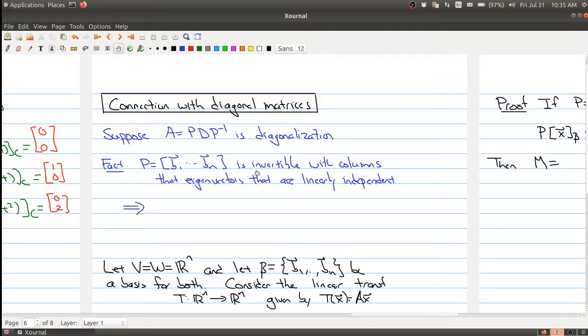The matrix P is invertible with columns that are eigenvectors, and they have to be linearly independent because the matrix is invertible. So that means that B1 up to Bn is a basis for Rn.